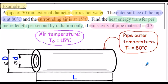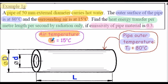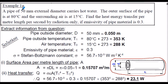Let's commence with a sketch of the problem. Here's our pipe — we're given the outside diameter, it's 50 millimetres. The pipe outer temperature, labelled T1, is 80 degrees C. And we have the surrounding air temperature, labelled T0, that's 15 degrees C. We're calculating the heat transfer per unit length, so L is effectively 1 metre here.